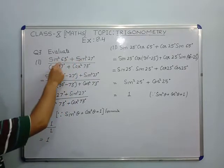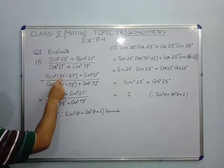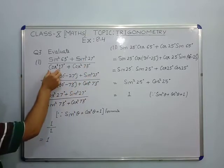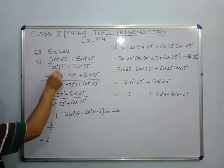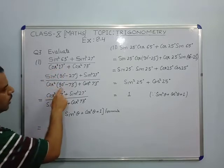We are changing here 63 as 90 minus 27. So sin²(90° - 27°) + sin²27° upon, and in the denominator we will change cos²17°, so we will write cos²(90° - 73°) + cos²73°.